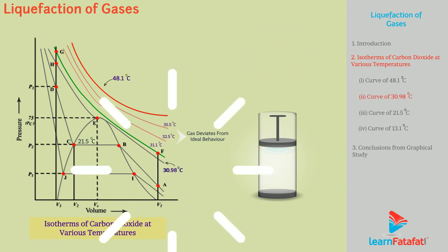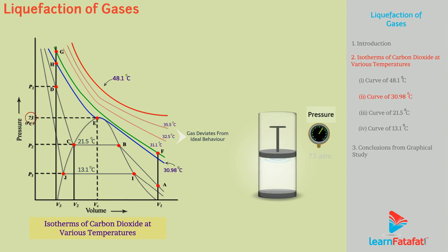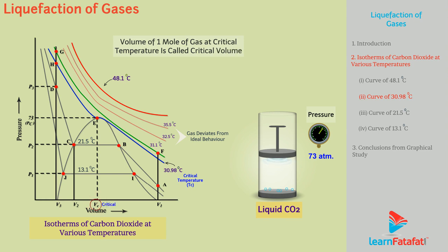At 30.98 degree Celsius temperature and 73 atmospheric pressure, liquid carbon dioxide appears for first time. This temperature is the critical temperature, that is Tc. Volume of one mole of gas at critical temperature is called critical volume, that is Vc.